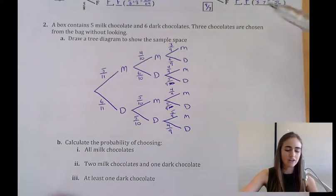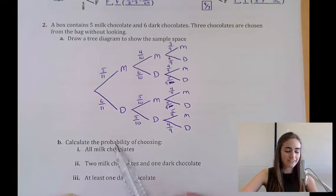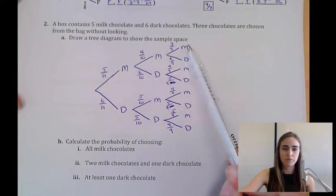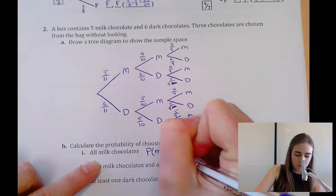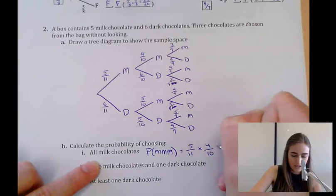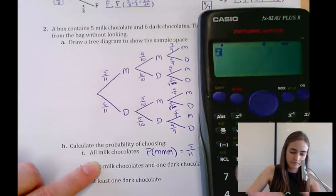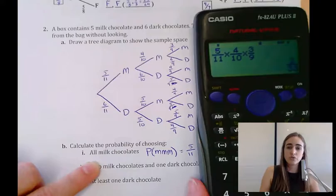First, calculate the probability of choosing all milk chocolates. The only way that can happen is along the top branch: P(milk, milk, milk) = 5/11 × 4/10 × 3/9 = 2/33.